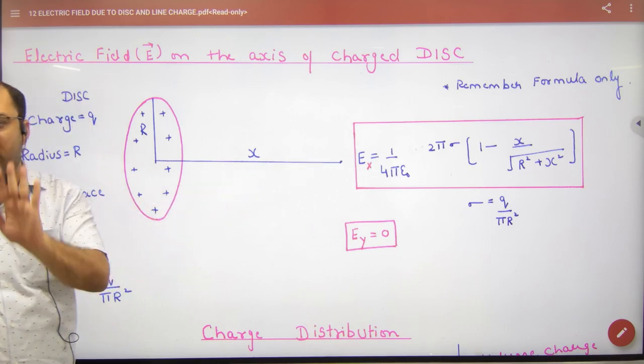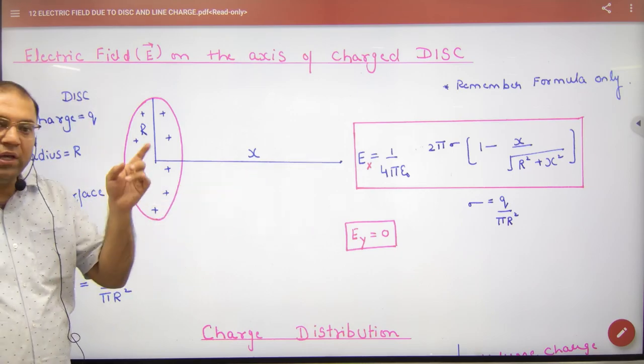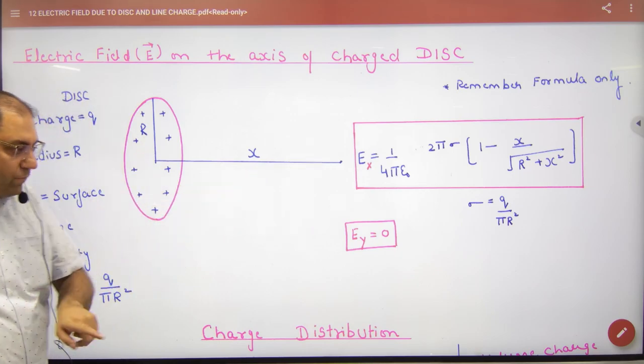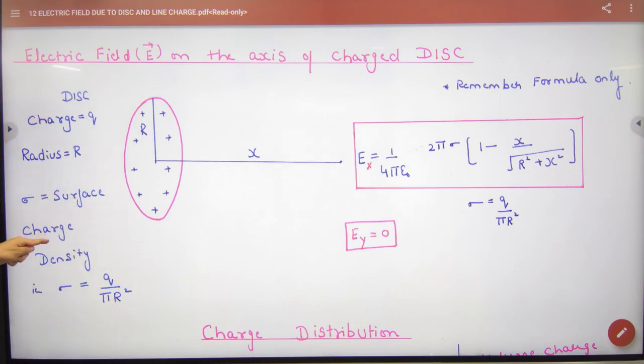You have to find E on the axis. Now, because it is area-wise distribution in the disk, what concept do we use? Surface charge density sigma.